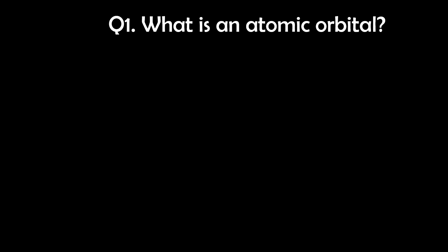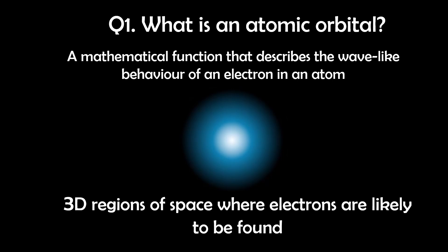Question 1. What is an atomic orbital? An atomic orbital is a mathematical function that describes the wave-like behaviour of an electron in an atom. This function can predict the probability of finding an electron in a particular 3D region around the atom's nucleus. Orbitals have different shapes and sizes which are crucial in determining how atoms bond and react with each other.